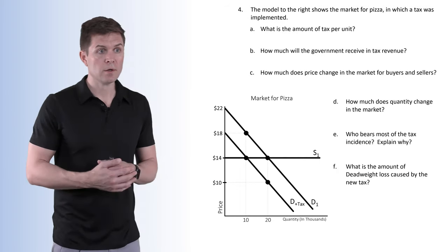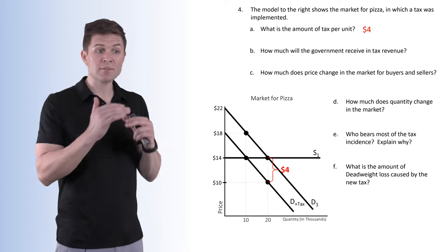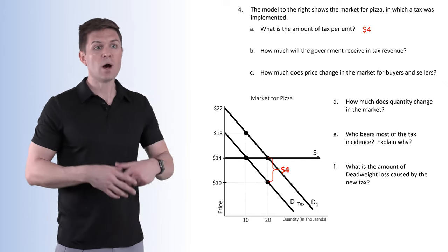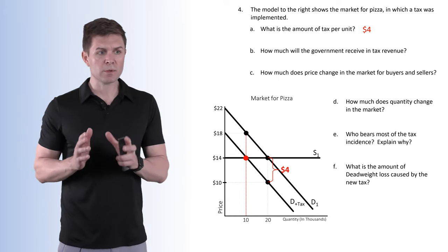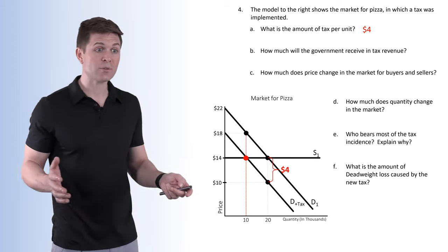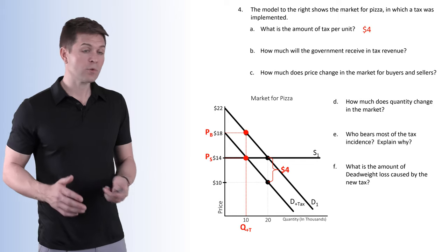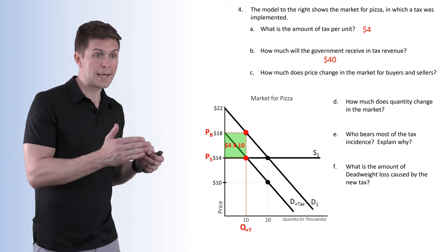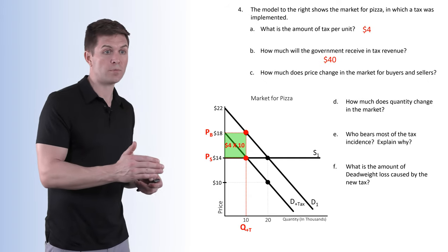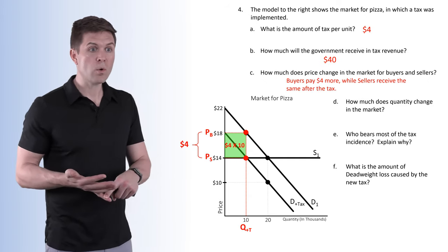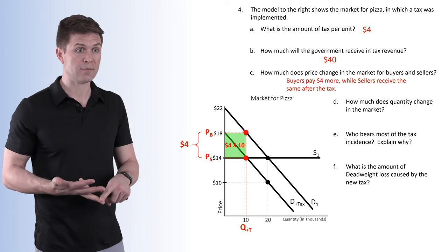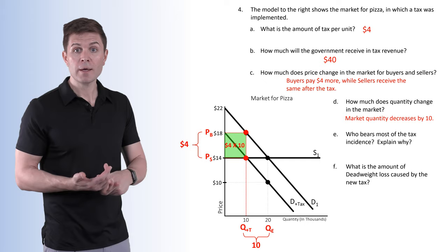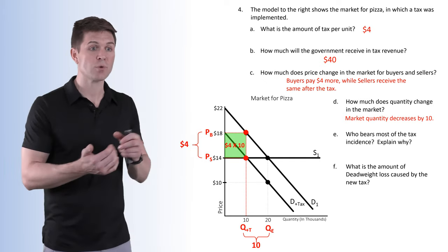Number four: we're looking at the market for pizza. What is the amount of tax per unit? It's $4 — the distance between the demand curve and the demand curve with the tax gives us the size of the tax. How much will the government receive in tax revenue? The new equilibrium is at $14, and the new equilibrium quantity is 10. So $4 per unit times 10 units gives us tax revenue of $40. The buyer pays $18, the seller receives $14. Originally we were at 20 units; with the tax we're at 10 — the market has shrunk by 10 units.